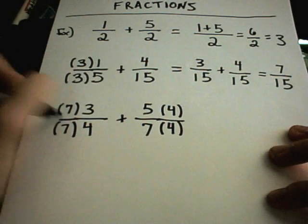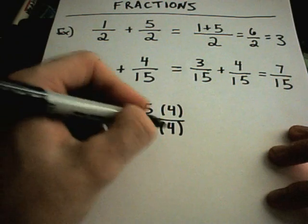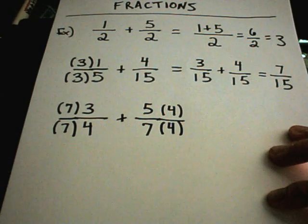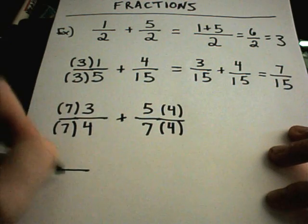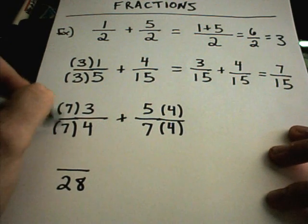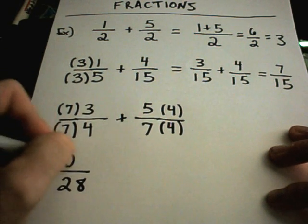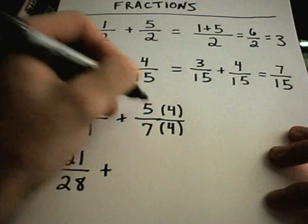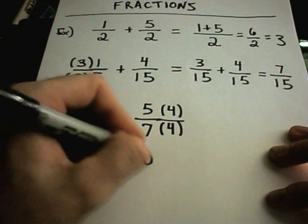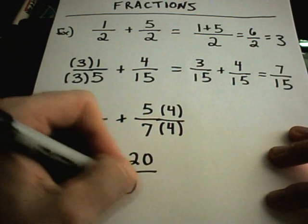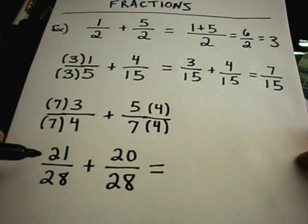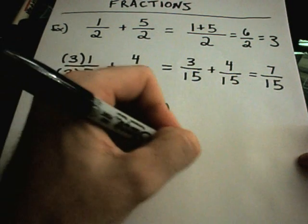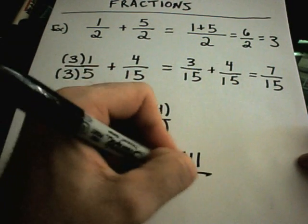Notice now you have 7 times 4, you're going to get the same denominator. In this case, you'll get 28 on the left side. 7 times 3 is 21. On the right side, you'll have 5 times 4, which is 20. 7 times 4 is 28. If you add 21 plus 20, you'll get 41 over 28.